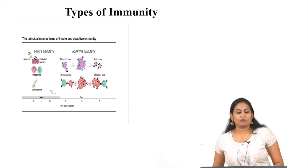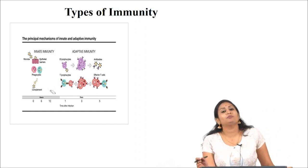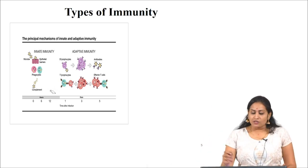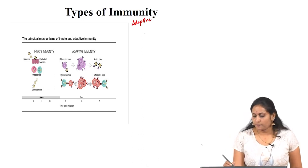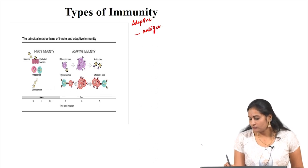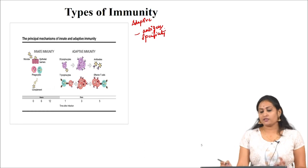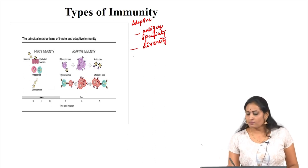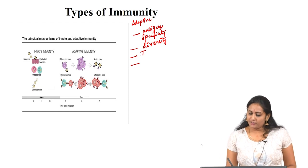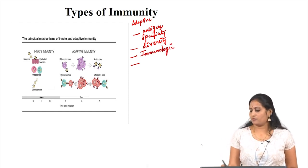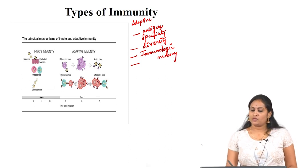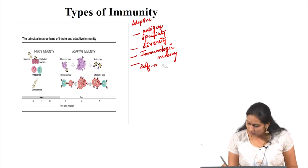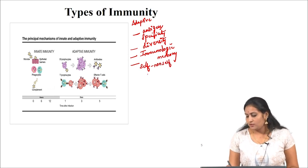The adaptive immune system has four important characteristic attributes: antigen specificity, diversity, immunologic memory, and self/non-self recognition.